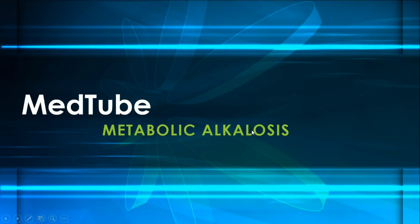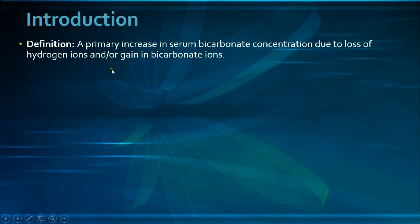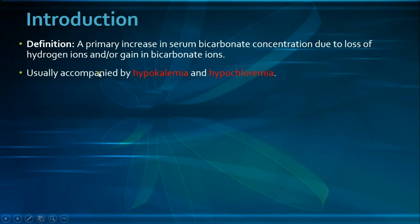Hello everybody and welcome to MedTube channel for another video on metabolic alkalosis. Metabolic alkalosis is defined as a primary increase in serum bicarbonate concentration due to the loss of hydrogen ions and/or the gain in bicarbonate ions, and it's usually accompanied by hypokalemia and hypochloremia, as you will be seeing shortly why that is important.